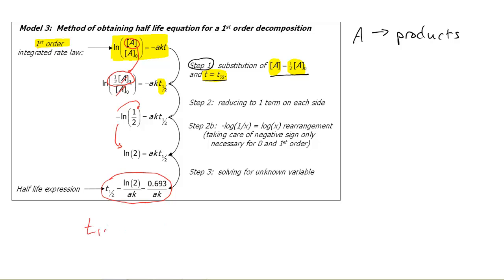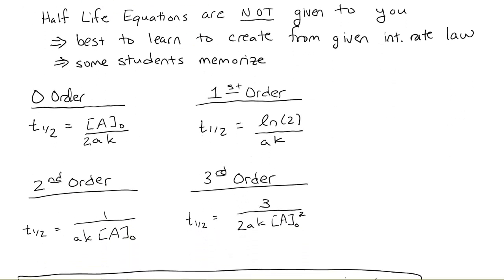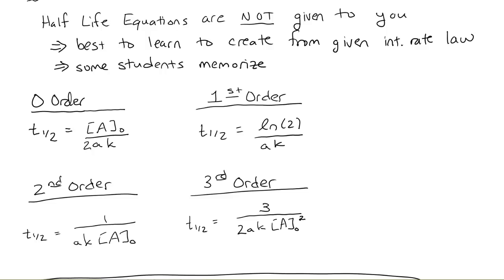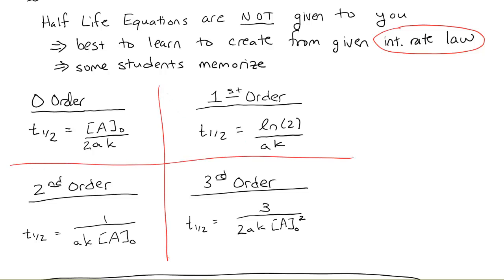Now we have a relationship. We rearrange it to solve for t sub 1/2. So when we ask for a half-life, it's always going to be t sub 1/2 equals some expression. We can do this for all the orders discussed in class: zero, first, second, and third order for a substance A breaking apart into products. The integrated rate law will be given to you, but the half-life equations may not — so the best approach is to derive a half-life from the integrated rate law by substituting the definition and rearranging, rather than just memorizing.